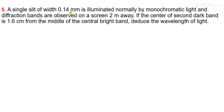The next question: a single slit of width 0.14 mm is illuminated normally by monochromatic light, and the diffraction bands are observed on a screen 2 meters away. If the center of the second dark band is 1.6 cm from the middle of the central bright band, find the wavelength of light.